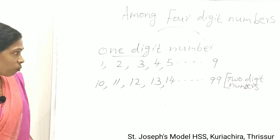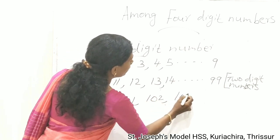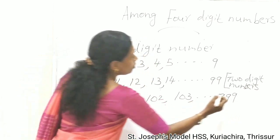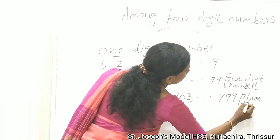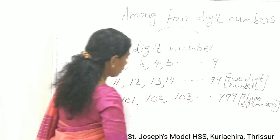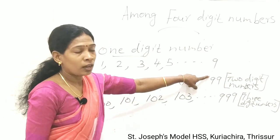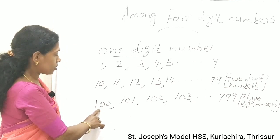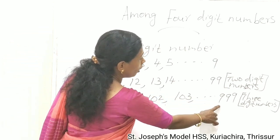Then our 3 digit numbers: 100, 101, 102, 103, up to 999. All these numbers are 3 digit numbers. Here 10 is the smallest 2 digit number and 99 is the largest 2 digit number. Similarly, 100 is the smallest 3 digit number and 999 is the largest 3 digit number.